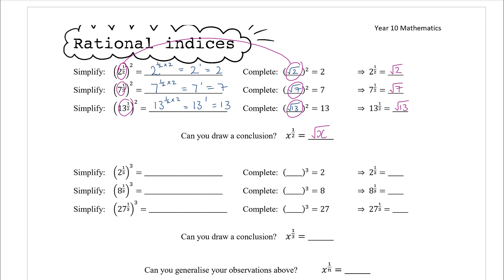Now let's think about powers of a third. Two to the power of a third — if we cube that, index laws tell us we multiply the indices together, so we get two to the power of one third times three, which is two to the power of one, which is two. Eight to the power of a third times three is eight to the power of one, which is eight. And twenty-seven to the power of one third times three equals twenty-seven to the power of one, which is twenty-seven.